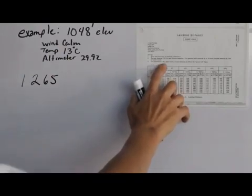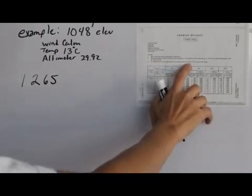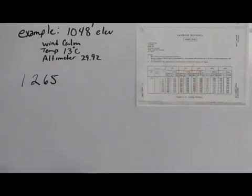And then it says for operations on a dry grass runway, then you would need to adjust your distance also. But we're landing on pavement, the winds are calm, the temperature standard and the altimeter standard.